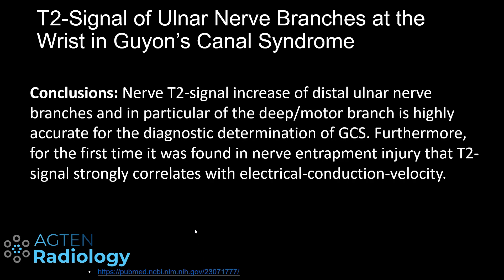A study showed that increased T2 signal of the distal ulnar nerve and its branches is a very good sign correlating with EMG and electro-conduction velocity findings, particularly true for the deep branch. This is less so at the level of the elbow — in the cubital tunnel, increased T2 signal of the nerve doesn't necessarily indicate neuropathy. That may be a topic for another video.